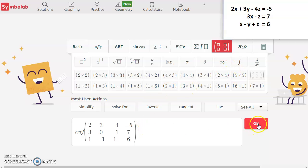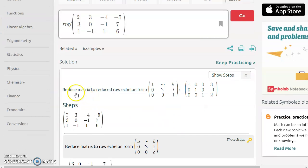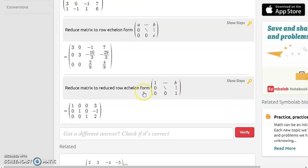All right, so now we can just hit go. And it recognized that as us wanting to reduce the matrix to reduced row echelon form. And there it is right there.